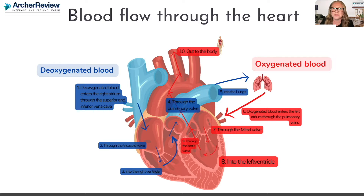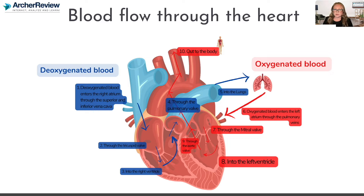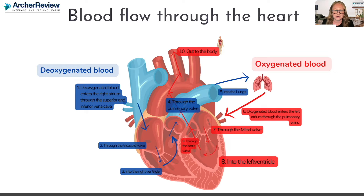Then what does it flow through? One of those valves — remember, one-way street — from the right atrium to the right ventricle we have the tricuspid valve. Once it's in the right ventricle and that right ventricle contracts, it has to go through the pulmonic semilunar valve, which is the exit door to the right ventricle.